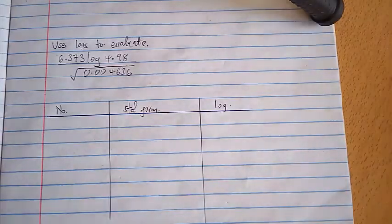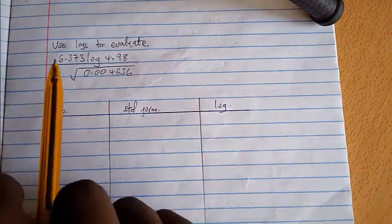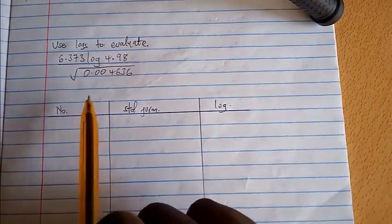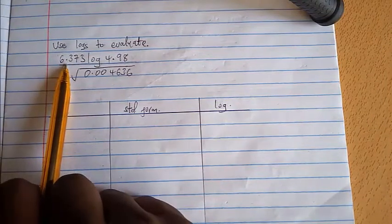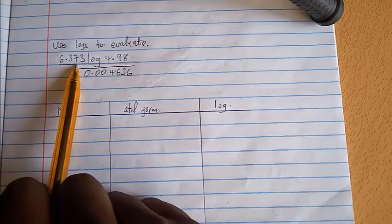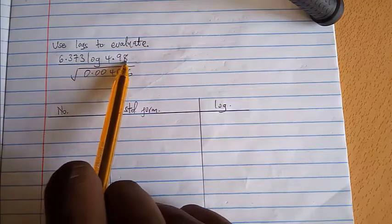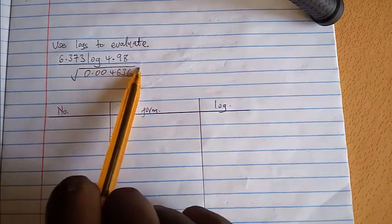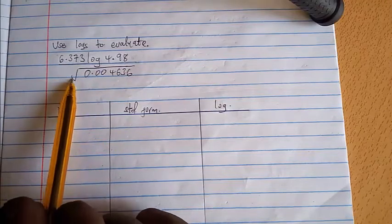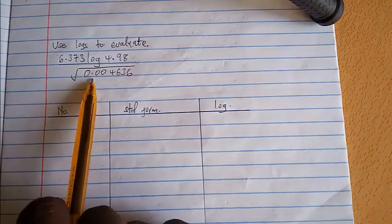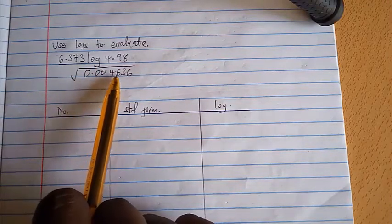Okay, now the question states that you're supposed to use logs to evaluate. On the numerator here we have 6.373 log of 4.98, then all over the denominator we have the square root of 0.004636.